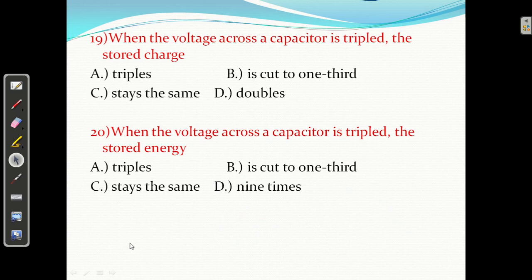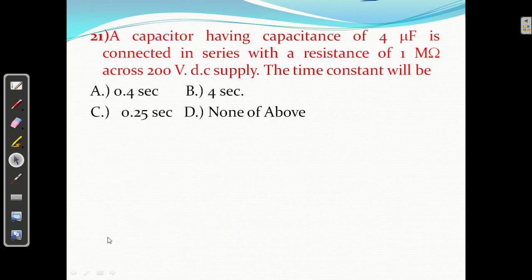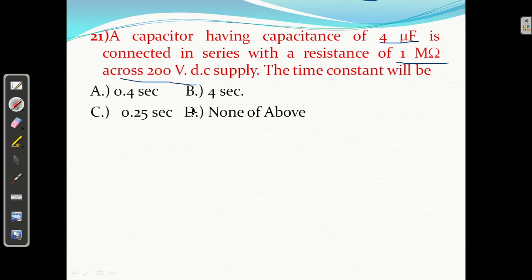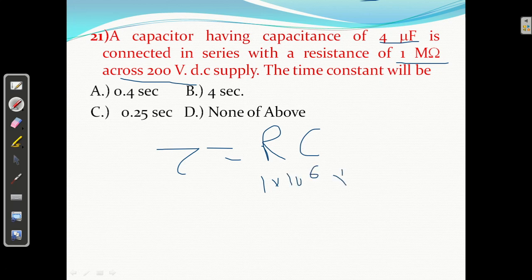Question number 21: a capacitor having capacitance of 4 microfarad is connected in series with a resistance of 1 mega ohm across a 200 volt DC supply. The time constant tau equals RC. R is 1 mega ohm equals 10 raised to power plus 6, C is 4 microfarad equals 4 into 10 raised to minus 6. These cancel to give tau equals 4 seconds. Answer is B: 4 seconds.